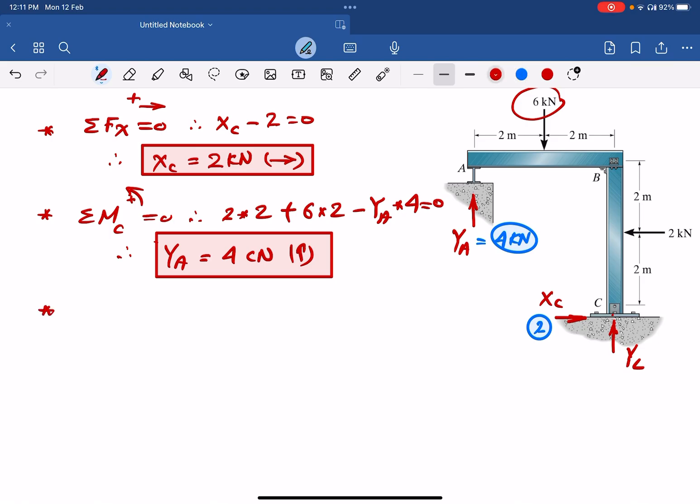Let's find the third one. And for the third one, we can use summation of FY equal to zero. And therefore, YC, which is unknown, minus six kilonewton, which is this value, plus YA, which is four that we already got before. So it will be plus four equals to zero. And therefore, YC equals two kilonewton going upward. And this will be the third unknown that we need to find. And let's write it here as well. This is two kilonewton. And by doing that, we found all the three unknowns.